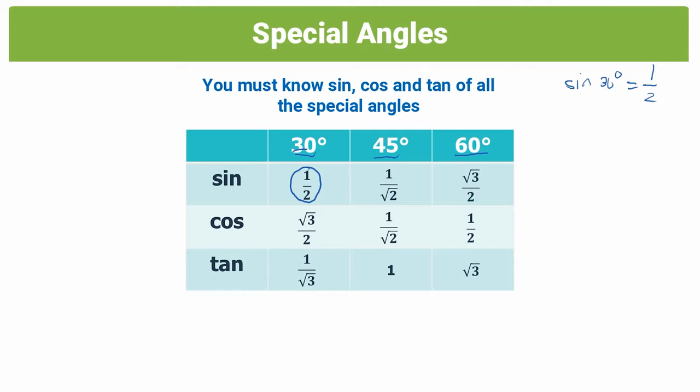But personally, I like to learn it using the brute force method. So just learning that sine 30 is half, cos 45 is 1 over root 2, tan 60 is root 3, just using a brute force method to learn it. However, if you want a memory technique, I will put a link in the description below.